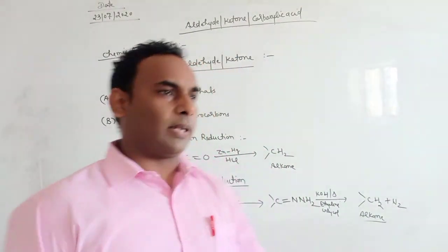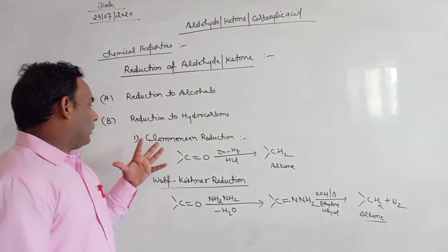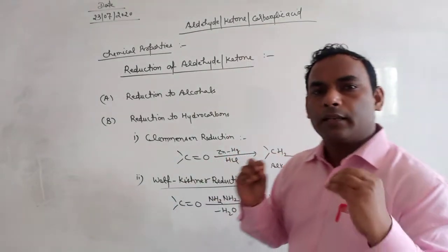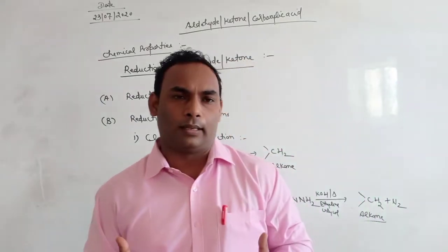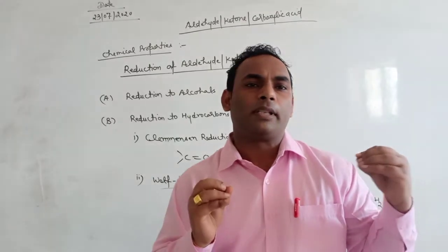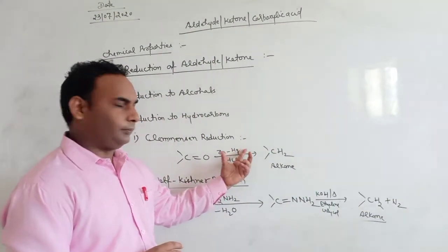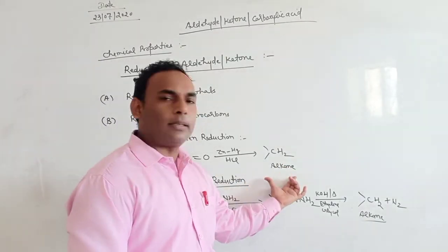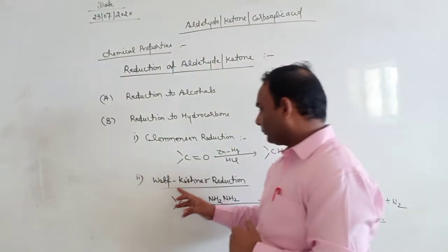The second type is reduction to alkanes. There are two very important reactions: the first is Clemmensen reduction and the second is Wolff-Kishner reduction. In Clemmensen reduction, the carbonyl group present in aldehydes and ketones is reduced into alkanes in the presence of zinc amalgam and hydrochloric acid. Zinc amalgam is an alloy of mercury with zinc. So using zinc amalgam in acidic conditions, aldehydes and ketones are converted into alkanes.